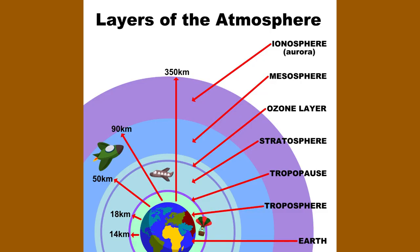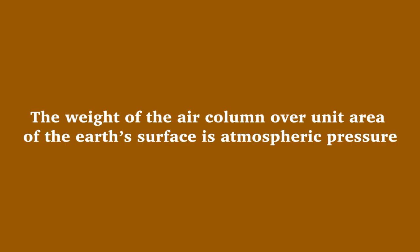There is an envelope of air in the form of layers surrounding the earth. This is the earth's atmosphere. It extends up to several kilometers from the surface of the earth. The weight of the air column over unit area of the earth's surface is atmospheric pressure.